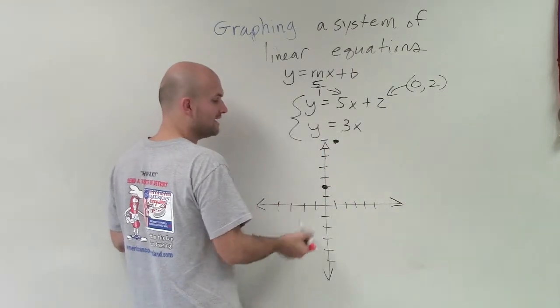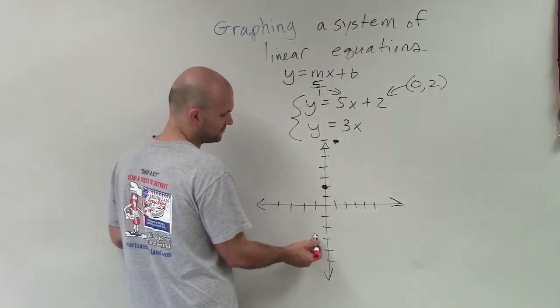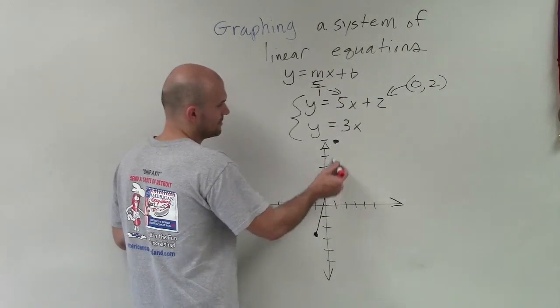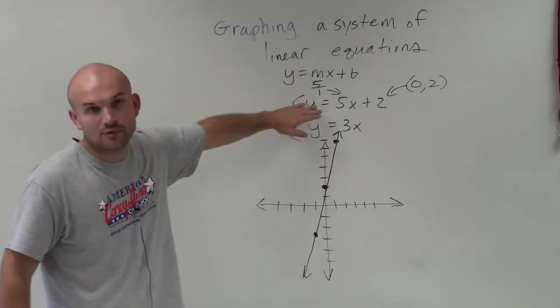I could also go in the negative direction, down 5, 1, 2, 3, 4, 5 to the left one. So that's going to be my first linear equation.